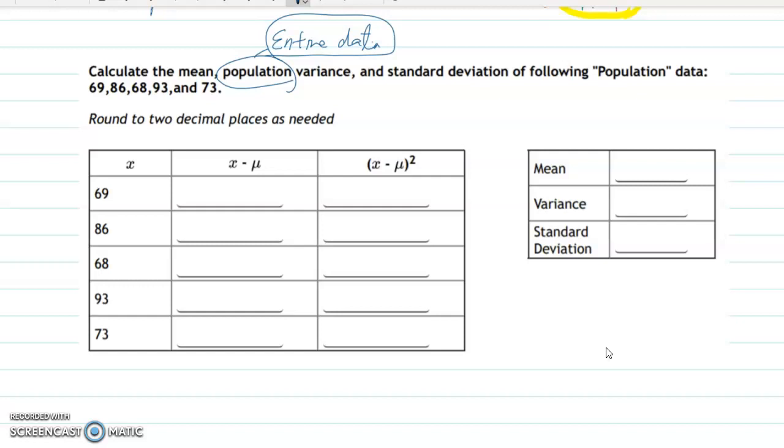So this time, 69, 86, 68, 93, 73. Only those data are our population collection data. Same thing with the sample data, you're organizing this. Because this is a small number of data, you're going to make either ascending or descending order. That's the reason I organized the following data set: 69, 86, 68, 93, and 73.